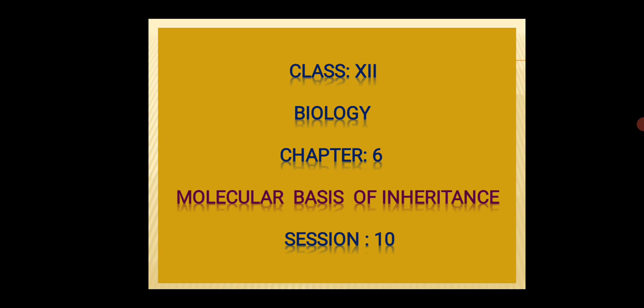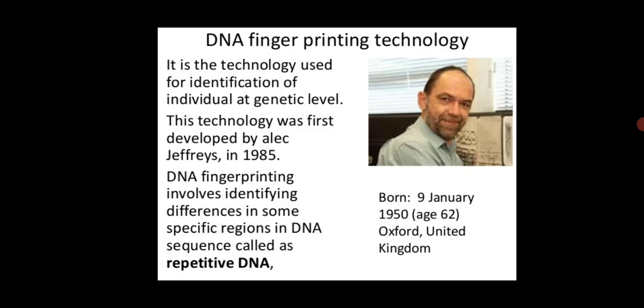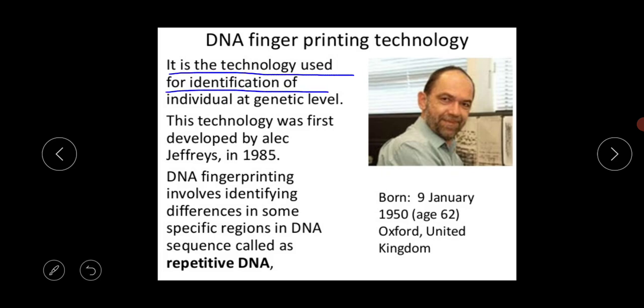In today's class we are going to discuss DNA fingerprinting procedure, which is the last topic of this chapter. This DNA fingerprinting technology is a very familiar and widely accepted technology in criminal science and modern biology. It is the technology used for the identification of individuals at the genetic level. This technology was first developed by scientist Alec Jeffreys in the year 1985.